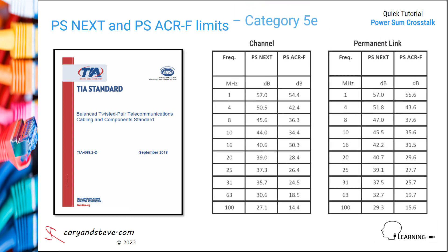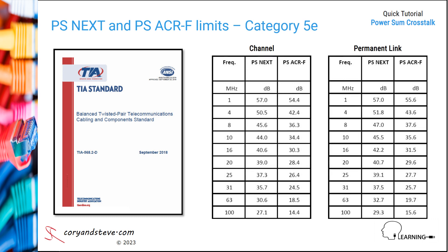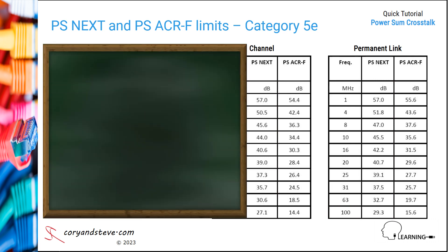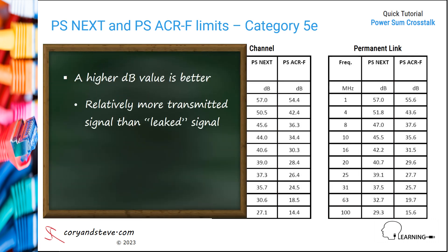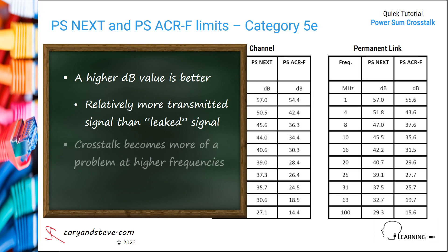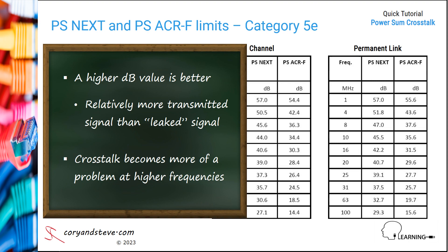Note that category 5E, as shown here, is characterized to a maximum 100 megahertz, with the dB values decreasing as the frequency increases. Recall that a higher dB value is better since it means there is relatively more signal than leakage at the source or destination end. These values show that crosstalk becomes more of a problem at higher frequencies.